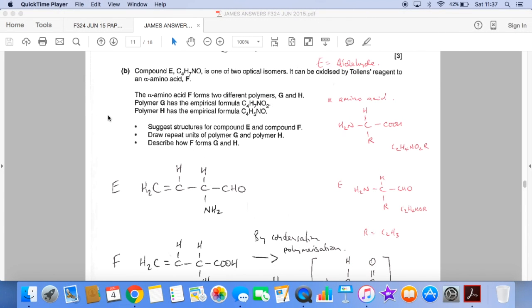So part B now, you can see I've got a lot of red scribble down here. This is my thought process as I'm reading through the information. So it can be oxidized by tollens, so I'm saying E must be an aldehyde to an alpha amino acid F. I reminded myself what an alpha amino acid looks like. So what I've done here is just added up the atoms in an alpha amino acid. So we've got two carbons, four hydrogens, a nitrogen, two oxygens and the R group. And so compound E must be the aldehyde version of this because this gets turned into that with the tollens.